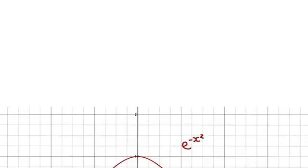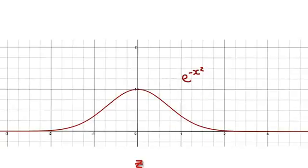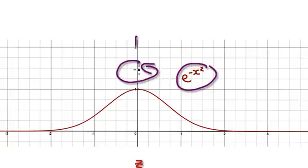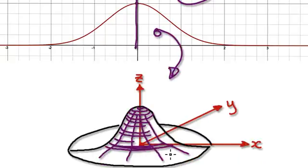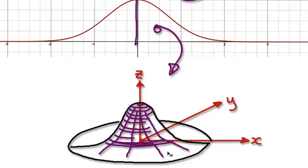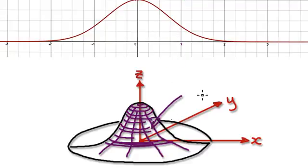Following on from the previous video, we've seen that if you rotate this 360° along the y-axis, you would get a 3D solid looking something like this, and we've also seen that the volume of this thing here is given by pi.